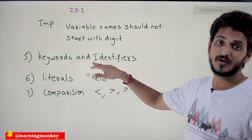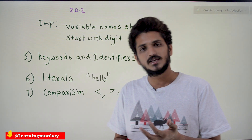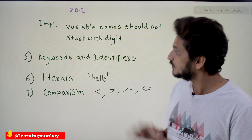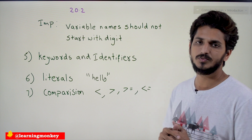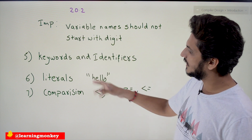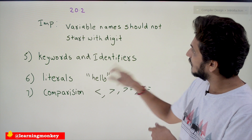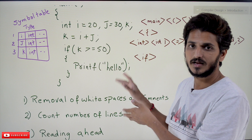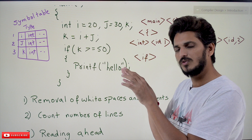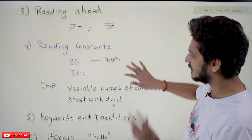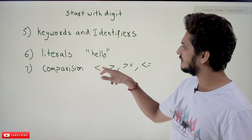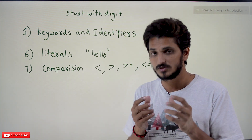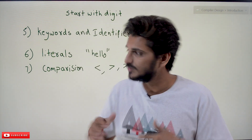Next, we have to identify keywords and identifiers. Keywords include 'if', 'int', 'float'. Identifiers include array names, variable names, and function names. Keywords should be separated and identifiers should be separated — this is also the responsibility of the lexical analysis phase. Next, we have to identify literals — string literals. Wherever you have double quotation marks, the content in between is a string literal and must be identified as one token. We also have to identify comparison operators: less than, greater than, greater than or equal to, less than or equal to, and all other operators present in your language.